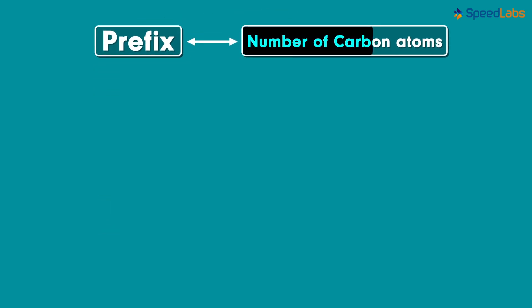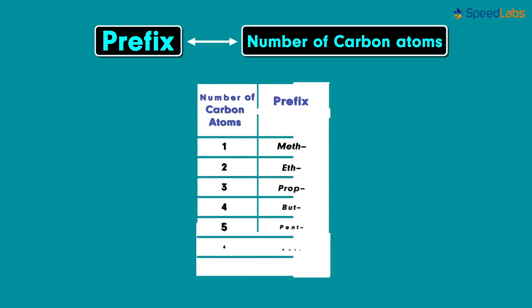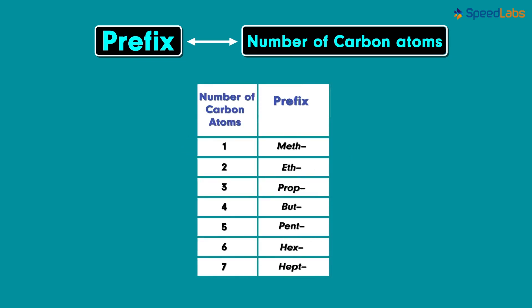The number of carbon atoms decides the prefix, and each number is assigned a specific term. This table gives us the prefixes linked to the respective number of carbon atoms. The prefix 'meth' represents one carbon atom, 'eth' represents two, and similarly we have 'prop,' 'but,' 'pent,' and 'hex' for three, four, five, and six carbon atoms respectively.